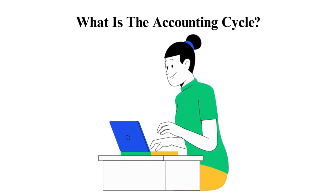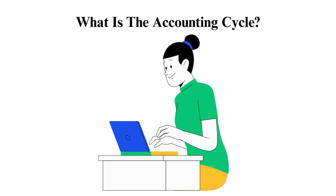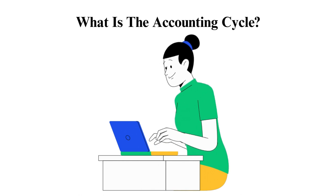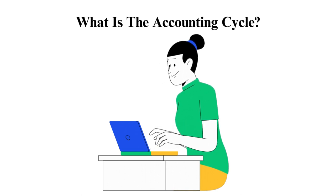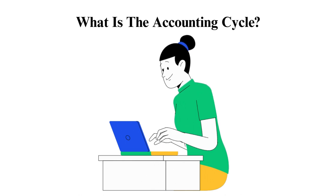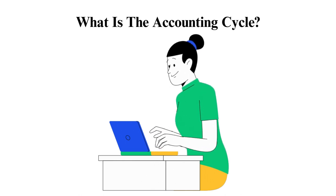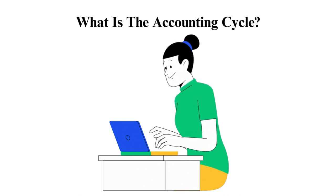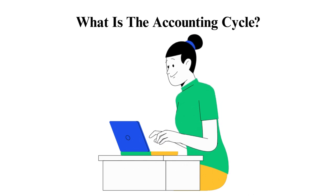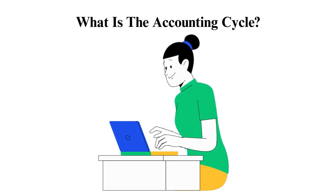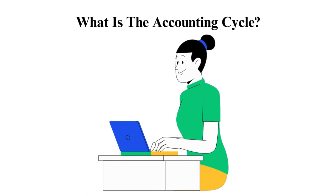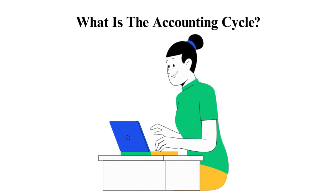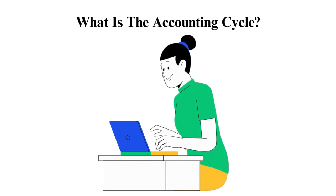Step five: check the worksheet for errors. Use this step to ensure that you have not missed any transactions. Step six: adjust journal entries to fix errors. Once the accounting period ends, check any anomalies and fix them before proceeding. Step seven: produce financial statements using data extracted from the accounting cycle documents. Step eight: close the books. Finalize by closing entries of temporary accounts like revenue, then transferring the income to retained earnings. This step allows you to prepare for a new cycle next period.